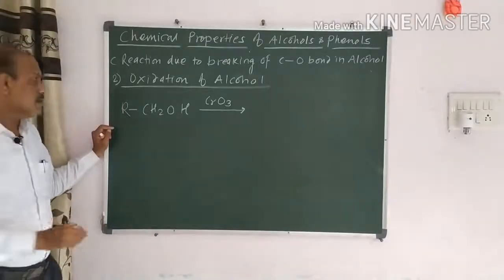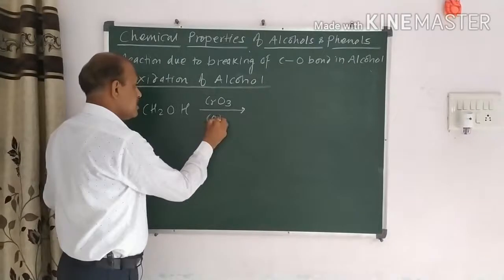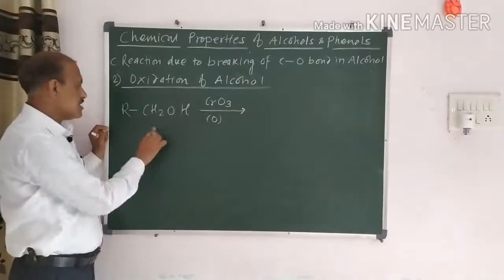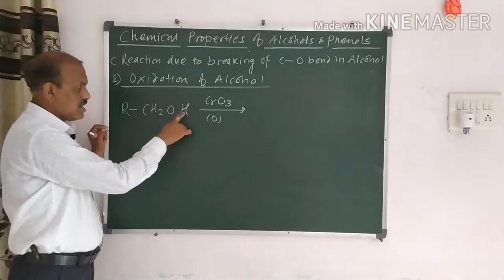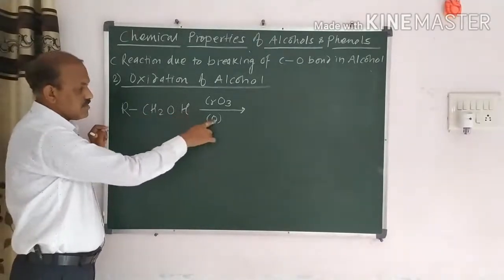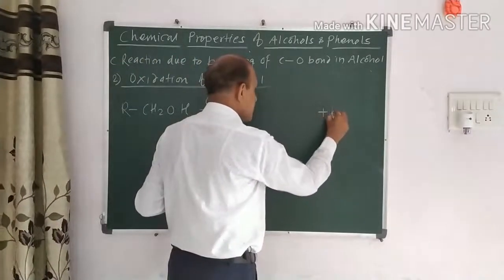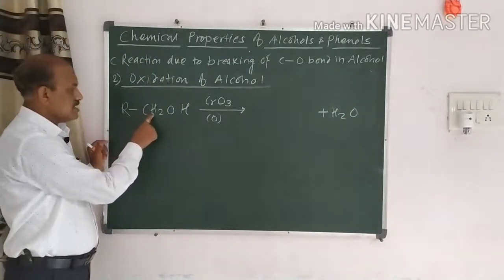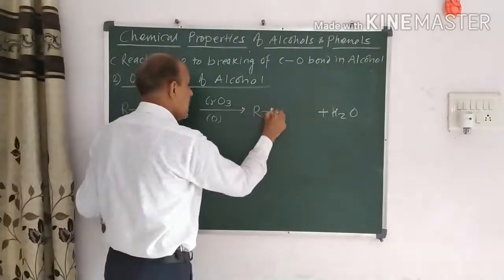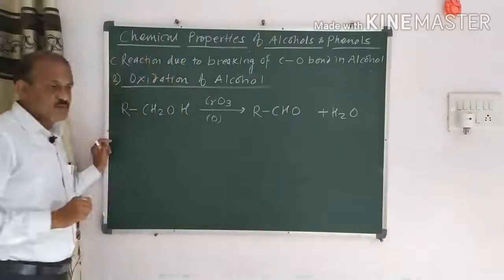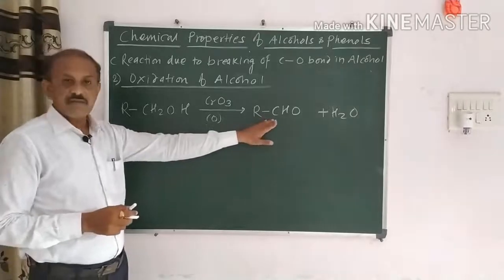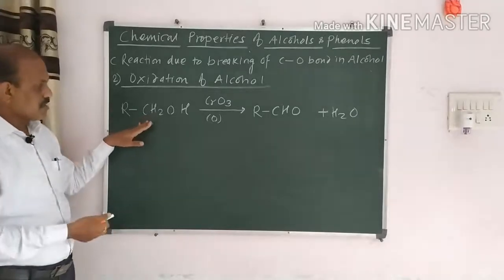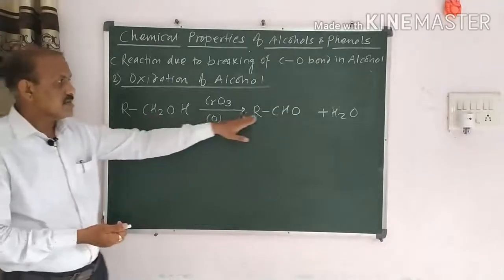Using CrO3 or PCC: one hydrogen atom from the carbon and one hydrogen atom from the OH, together with oxygen, form H2O. What remains is R, CH, and O — giving RCHO. Therefore, aldehyde is formed. The aldehyde is the first oxidation product of primary alcohol.